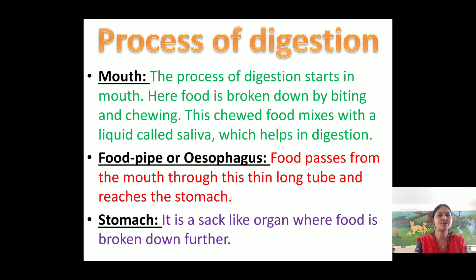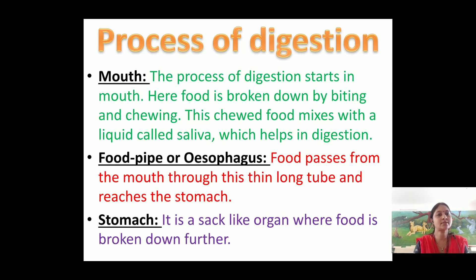The process of digestion starts in the mouth itself. Here the food is broken down by biting and chewing. This chewed food mixes with saliva, which helps in digestion. Then after swallowing, the food passes through the food pipe or esophagus — a thin long tube — and reaches the stomach.